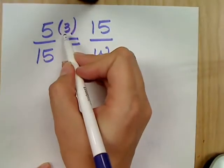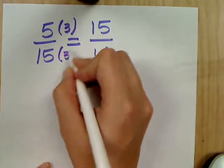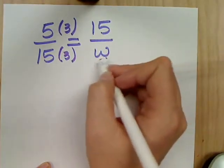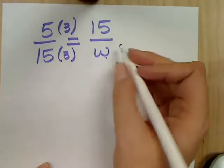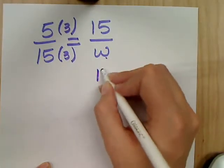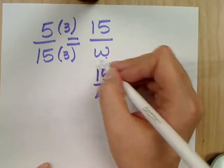If I'm multiplying by 3 on the top, I have to do the same thing here. So it would be something times 3 gives me W. 15 times 3, right, gives me W? Yeah, so this should be 15 over 45. So the W should be 45.